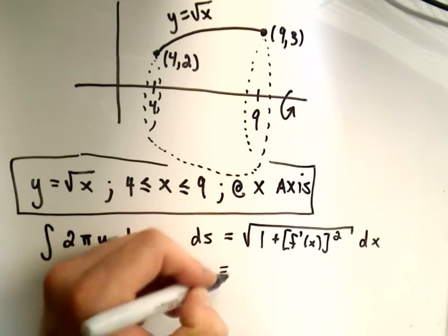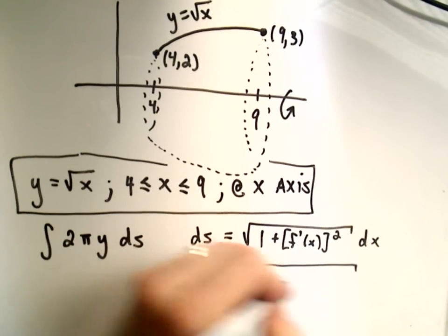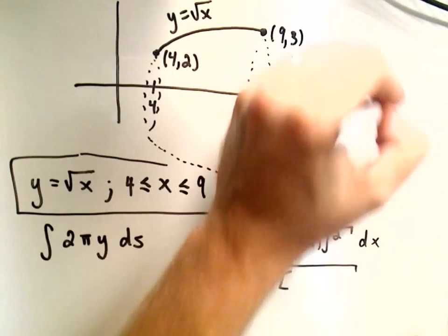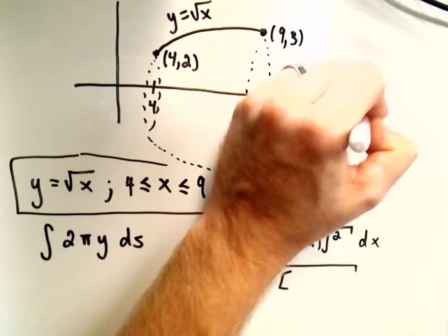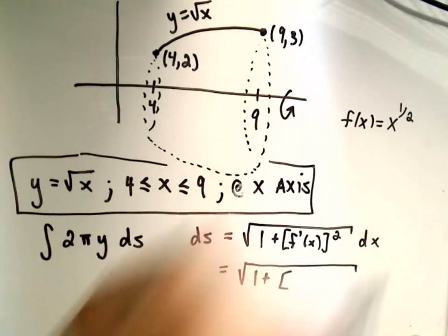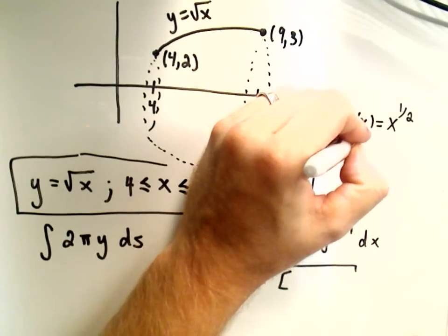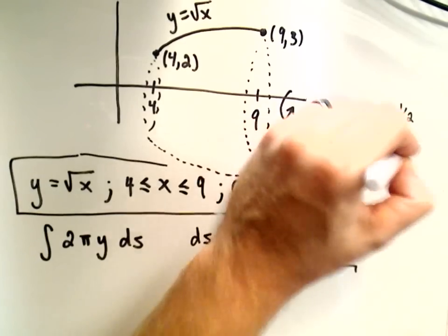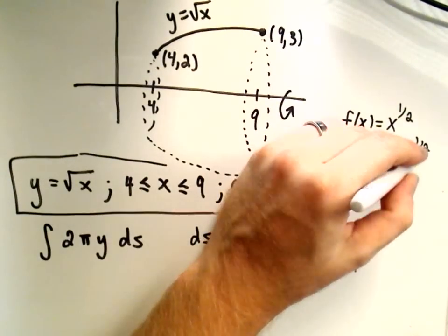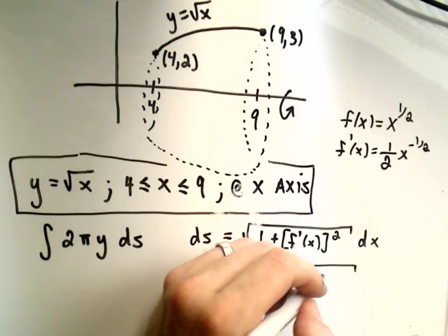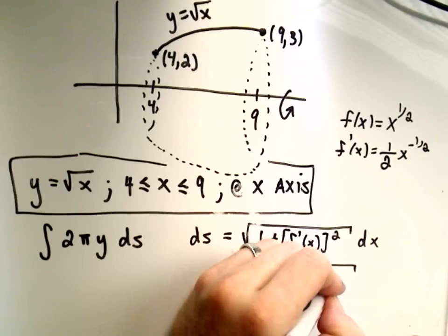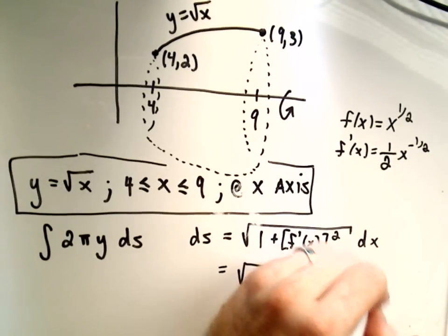Okay, so if we do that in this case, I'm going to have 1 plus... my function in this case here, if we rename it, we can say f(x) is just going to be square root of x, or x to the 1/2. So the derivative of that will get 1/2 x to the negative 1/2. Properties of exponents, we can put the square root back in the bottom. So the derivative will be 1 over 2√x quantity squared dx.